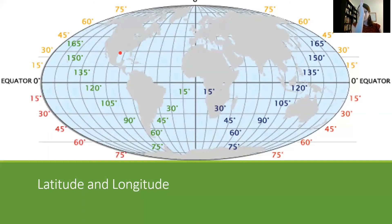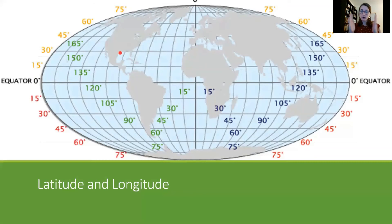For longitude, remember it goes 'long' — up and down — and our center line is called the prime meridian. The prime meridian runs right through part of Europe and part of Africa, going from pole to pole. Just like the equator, on either side of the prime meridian we see 15, 30, 45, 60, 75 degrees and beyond. When we put all this together it makes a grid to identify different points so we can know exactly where we're talking about on the earth — and this is a shared system.